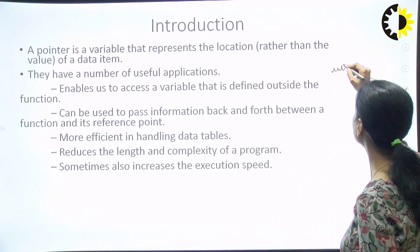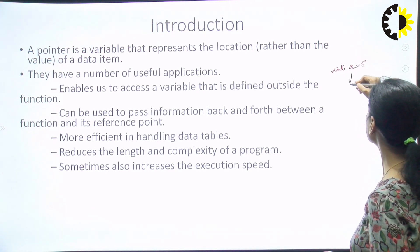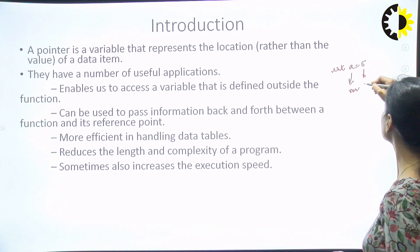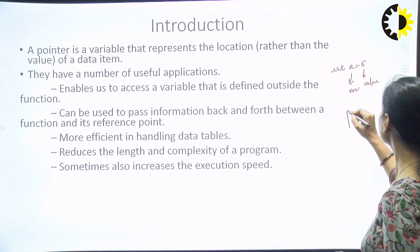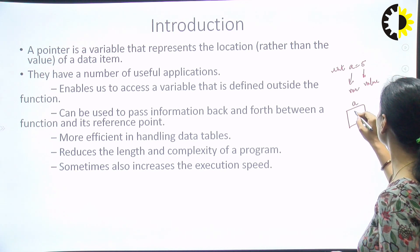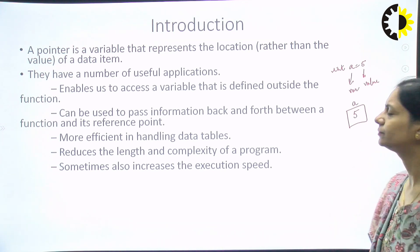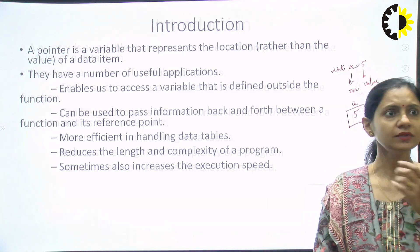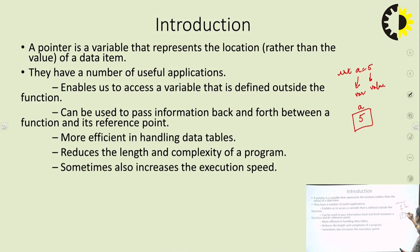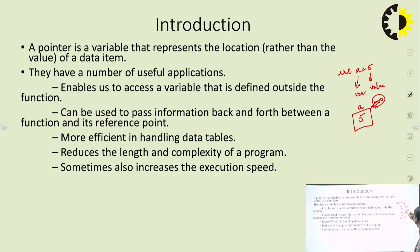Suppose I take int a equals to 5. So this 'a' is a variable and 5 is a value. In the memory, 'a' is stored somewhere with the variable name 'a' and the value 5. Now, this pointer will actually be accessing the address — that is, at what place this variable is stored. Suppose this variable 'a' is stored at memory location 1000. So the pointer is a variable which will represent this address and through this it will represent the variable; it will not directly access the value 5.